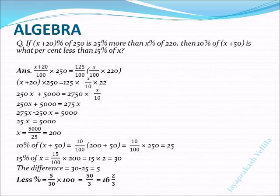Next, 15% of x = (15/100) × 200 = 15 × 2 = 30.